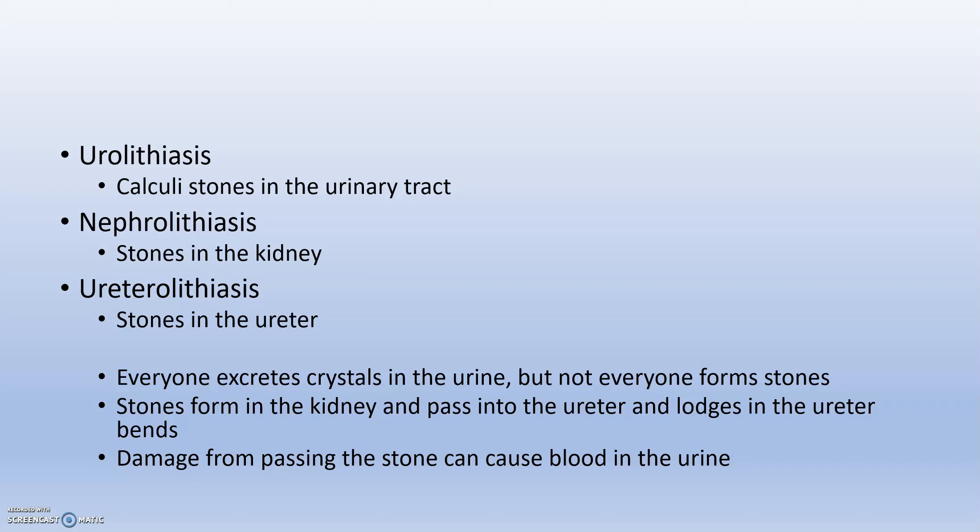Damage from a passing stone can cause blood in the urine. When collecting a urine sample, if there is blood in the urine, we need to find out why — whether it's a tumor or a stone passing through, it shouldn't be there. The stone itself tends to be large and jagged, and it really scratches its way out, which is the source of the bleeding.